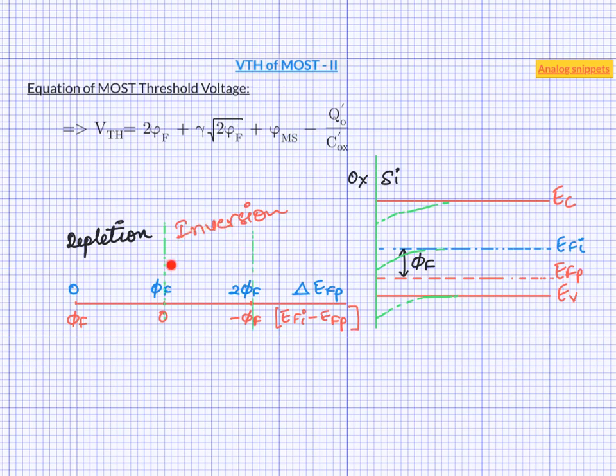Below threshold voltage, which is this region, is known as weak inversion or sub threshold and above this line is known as strong inversion. Now weak and strong inversions are very different in their transport mechanism. So it is only fair to expect that this transition does not happen suddenly. This transition region is defined by its own name, which is moderate inversion.